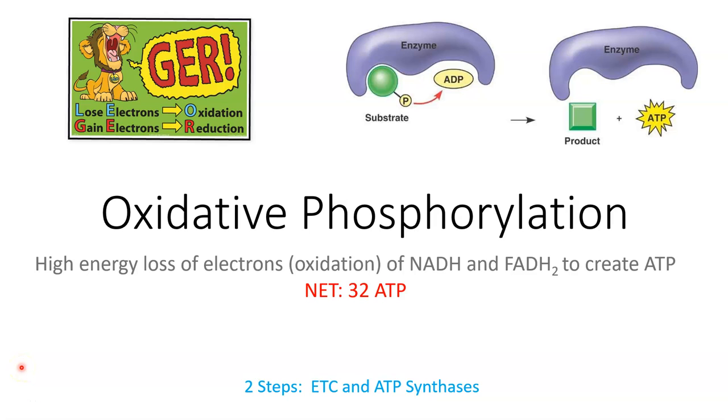Our final step of cellular respiration is oxidative phosphorylation. Oxidative phosphorylation is where we actually have a high energy loss of electrons. We're going to go through oxidation, which is the loss of electrons.